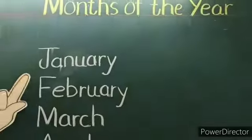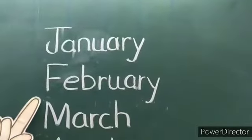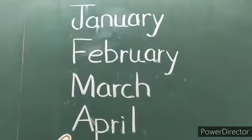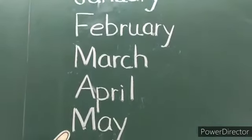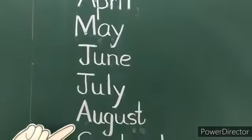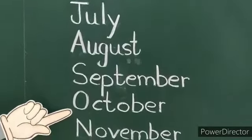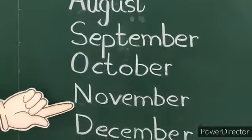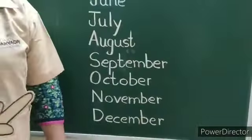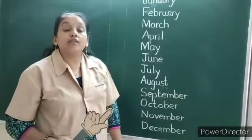Now listen carefully children. January, February, March, April, May, June, July, August, September, October, November, December. Remember children, once again they will repeat and you will repeat after teacher.